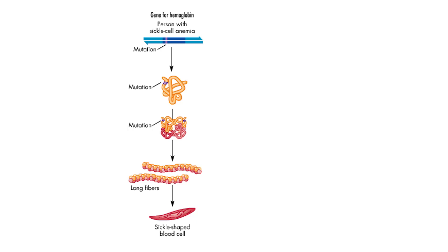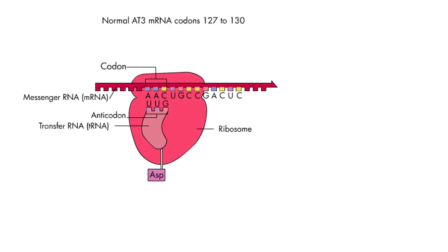Common types of mutations are base substitution mutations, silent mutations, and premature stop codons. Here you see part of the AT3 mRNA. These 12 RNA bases encode four amino acids in the heart of the AT3 protein. tRNAs bring the four appropriate amino acids to the ribosome, where they are added to the growing protein chain.